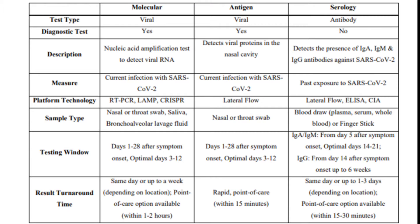Now moving on to the antigen test — this again detects the virus and is a diagnostic test, but here it detects the viral proteins in the nasal cavity. It detects the current infection, and the platform usually used is lateral flow. The samples used are nasal or throat swabs, and the testing window is 1 to 28 days after symptom onset, with an optimal window of day 3 to 12. A real advantage is that it is a rapid point-of-care test with a turnaround time of approximately 15 minutes.